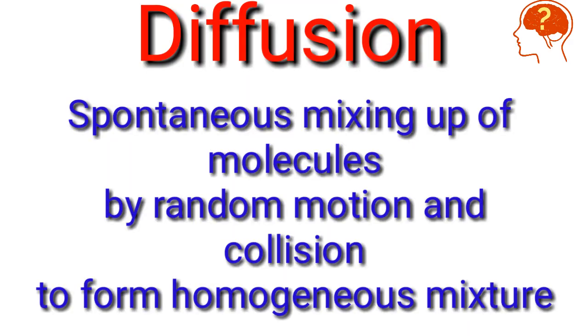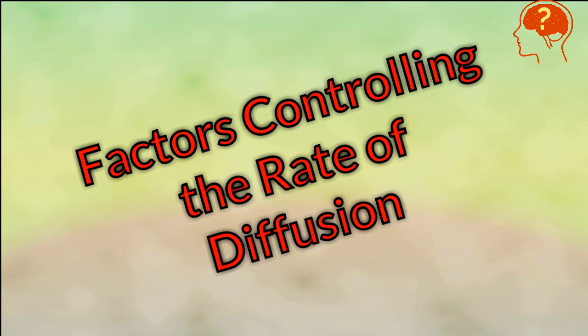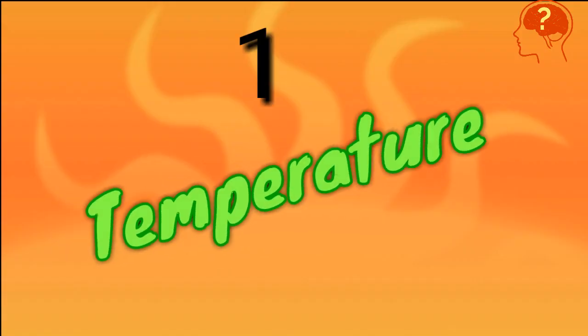Diffusion is the spontaneous mixing up of molecules by random motion and collisions to form a homogeneous mixture. The first factor controlling the rate of diffusion is temperature.